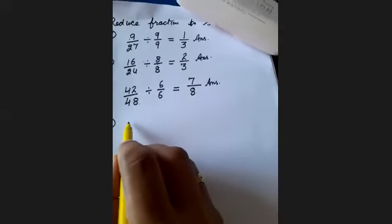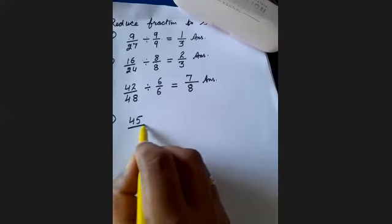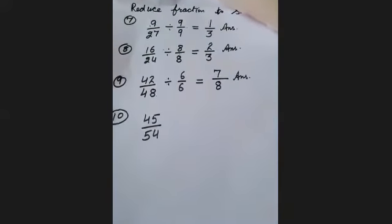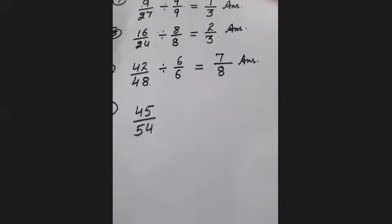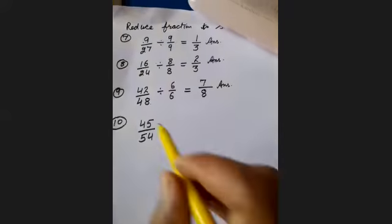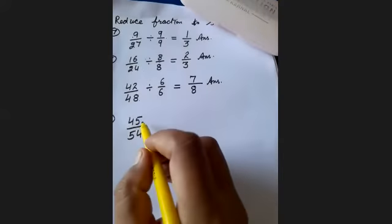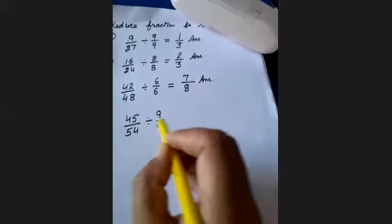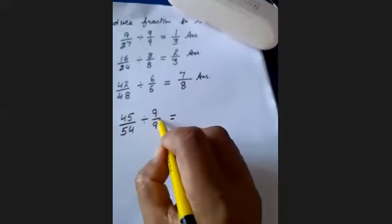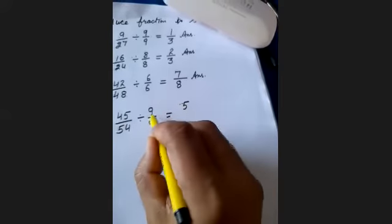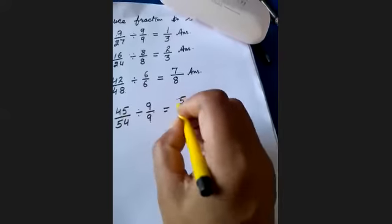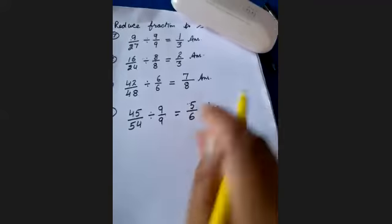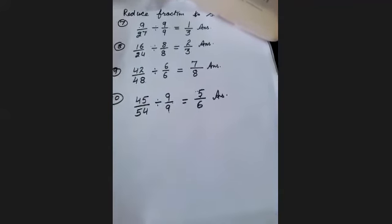Question 10: 45 upon 54. Both 45 and 54 are multiples of 9. Divide by 9. 9 times 5 is 45, so 45 divided by 9 is 5. And 9 times 6 is 54, so 54 divided by 9 is 6. Your answer is 5 upon 6.